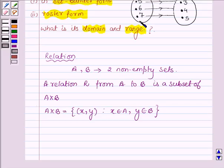Here we will give a specific rule of the relationship and in the roster form we will list the ordered pairs satisfying the rule.